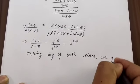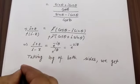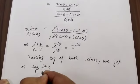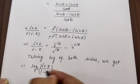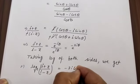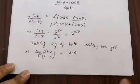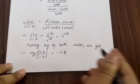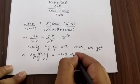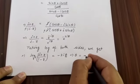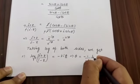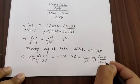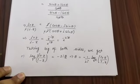Taking log of both sides, we get: log_e((i+z)/(i-z)) = -2iθ. We want to isolate θ, so θ = -1/(2i) * log_e((i+z)/(i-z)).